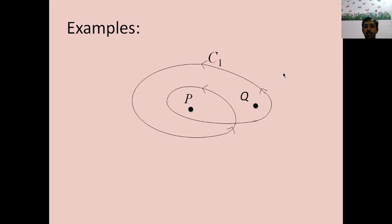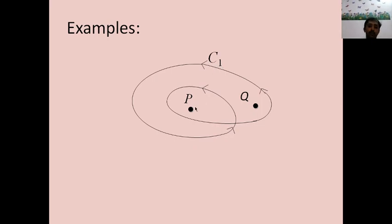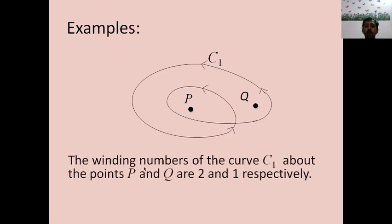To understand this, consider curve C1 as given in this picture. There are two points P and Q. The curve C1 traverses once and twice about the point P in the anticlockwise direction, so the winding number of C1 about P is 2. About the point Q, the curve traverses only once in the anticlockwise direction, so the winding number of C1 about Q is 1.